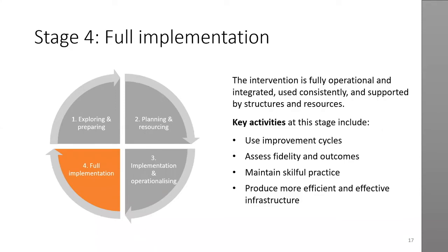Stage four is the final stage, normally called the getting better stage. This is when the intervention is fully operational, integrated and supported by structures and resources. Key activities include using improvement cycles, assessing fidelity and outcomes, maintaining skilful practice and producing more efficient and effective infrastructure. The outcomes of the intervention are ready to be evaluated, providing an opportunity to show impact and progress through continuous improvement cycles. Those involved should also reflect on the implementation process and learn from experience to inform future implementations.